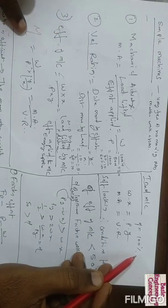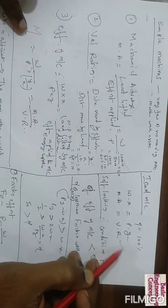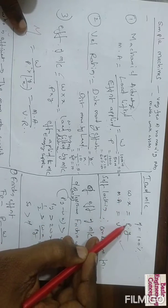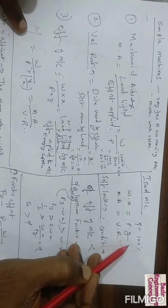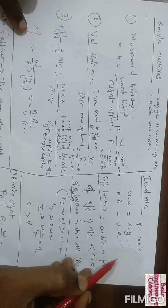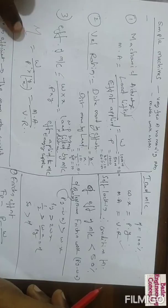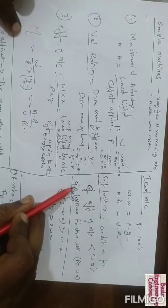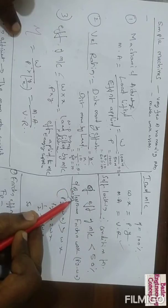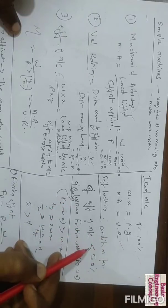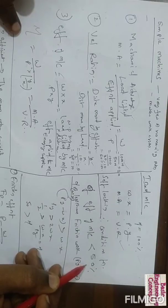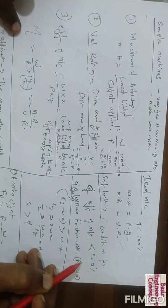Efficiency equals mechanical advantage divided by velocity ratio. An ideal machine is one having 100% efficiency, meaning mechanical advantage equals velocity ratio, and load times distance moved by the load equals effort times distance moved by the effort. For a self-locking machine, the frictional work (P times y minus W times x) is less than the output. The condition for self-locking is that the efficiency of the machine must be less than 50%.